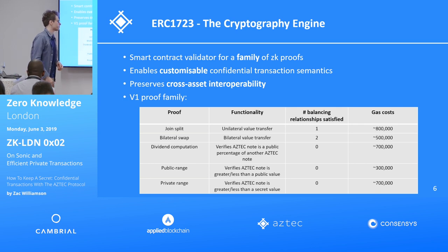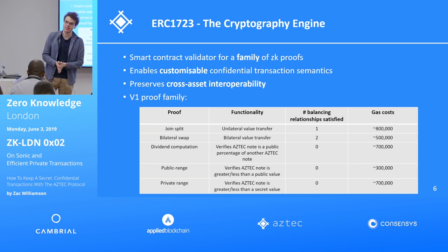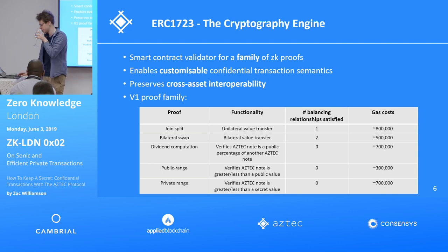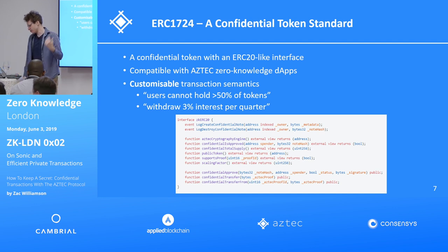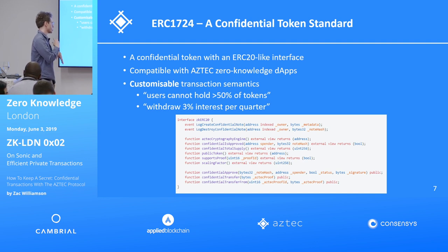With the Istanbul hard fork planned, there is an EIP that will reduce these gas costs by a factor of six to eight, which is very exciting because this stuff then becomes quite competitive with an ERC20 token transfer, hopefully massively expanding the potential use cases. The token standard interface is ERC20-like — that was quite deliberate, to make this as familiar as possible. Instead of transfer and transferFrom, it has confidentialTransfer and confidentialTransferFrom, where you can customize the zero-knowledge proofs validated in those transfer statements to have your custom logic.